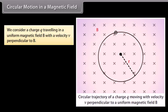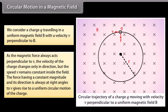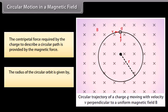Circular Motion in a Magnetic Field: A charge Q traveling in a uniform magnetic field B with a velocity V perpendicular to B experiences a magnetic force that always acts perpendicular to V. The velocity changes only in direction while the speed V remains constant. This gives rise to uniform circular motion. The centripetal force required is provided by the magnetic force, and the radius of the circular orbit is given by r = mv / QB.